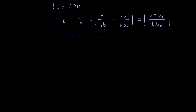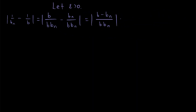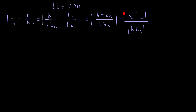This is starting to look all right. The absolute value of a division is the same as the division of the absolute values, so this equals the absolute value of b minus bn divided by the absolute value of b times bn. The order of subtraction within absolute value bars doesn't matter, so we can flip this to be bn minus b. That is nice because we can make this as small as we want since bn converges to b. Just how small are we going to want to make this numerator? We want all of this to be less than epsilon.